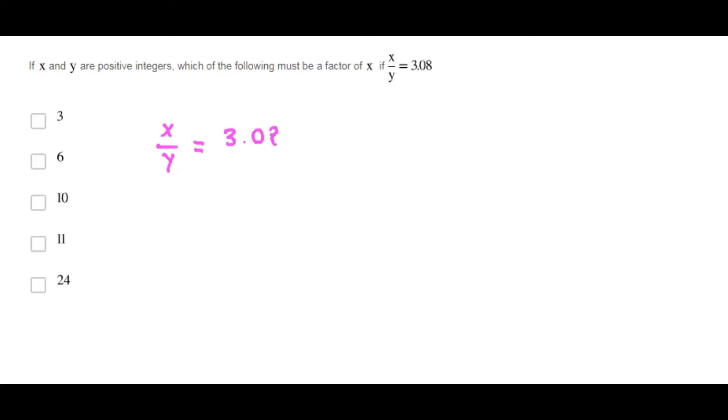So they state the following: the division is this decimal and they both are positive integers. Solving for X, X is 3.08 times Y.